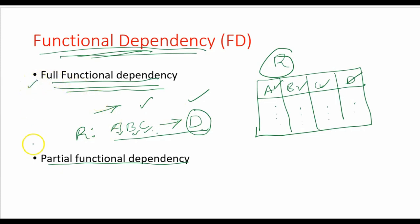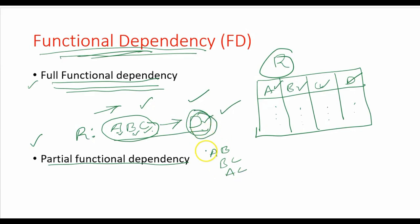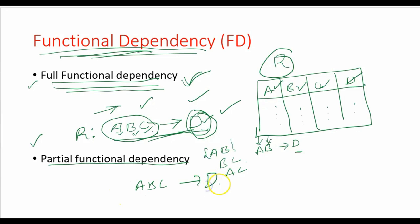For full functional dependency, attribute D should not be dependent on any subsets of {A, B, C} — such as {A, B}, {B, C}, or {A, C}. If A, B → D and D does not depend on any subset, then it is full functional dependency. For partial functional dependency, if A, B, C → D but D is also functionally dependent on a subset like {A, C}, then that is called partial functional dependency.